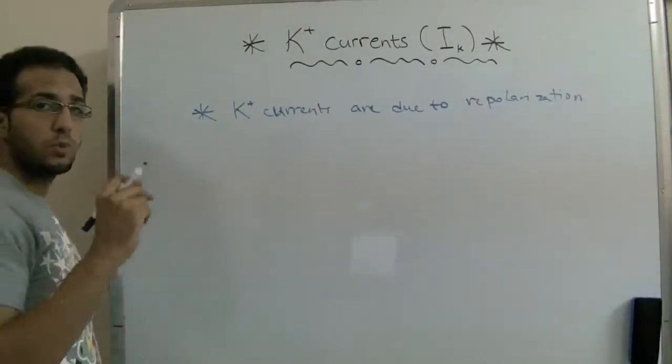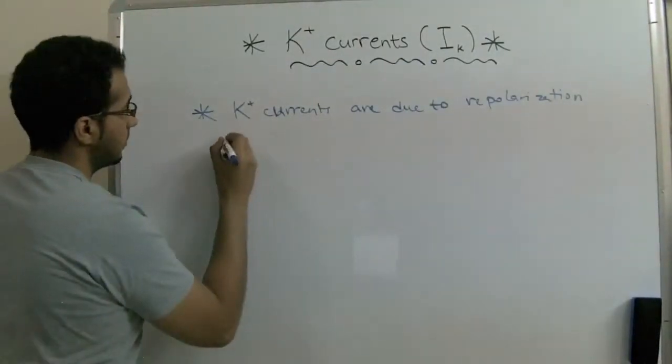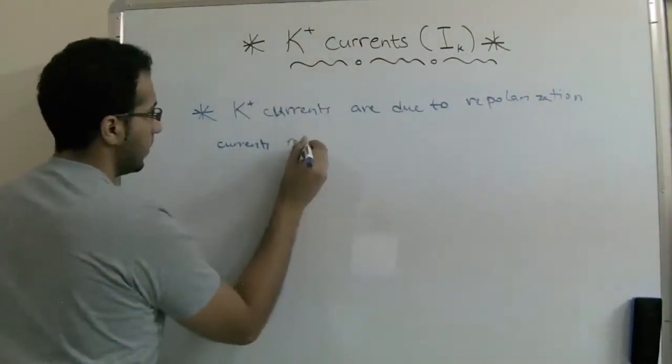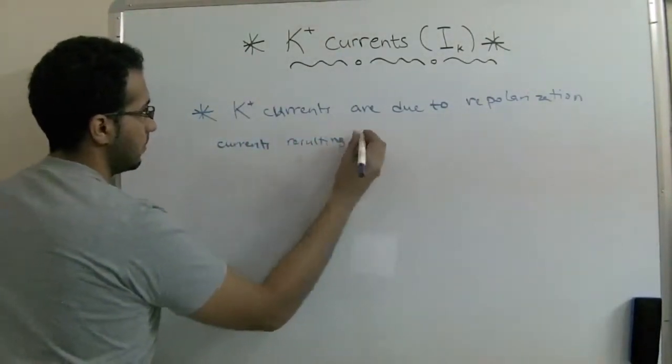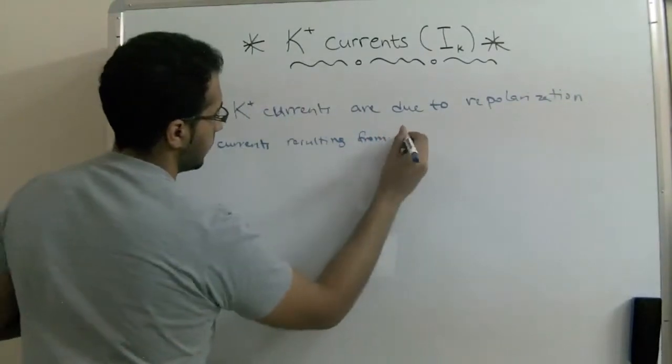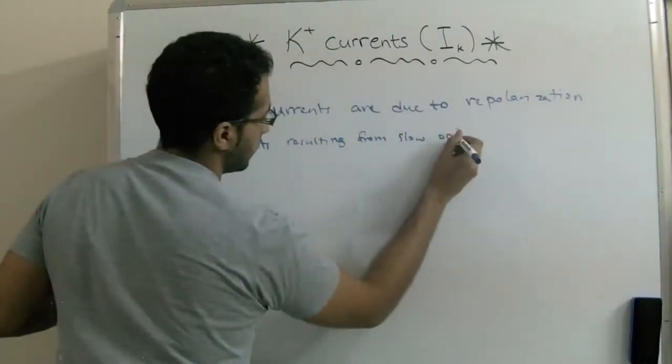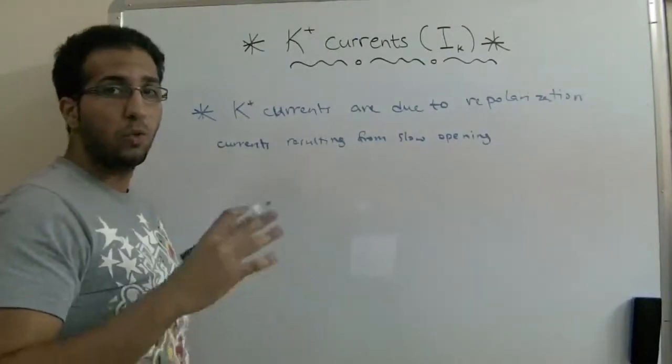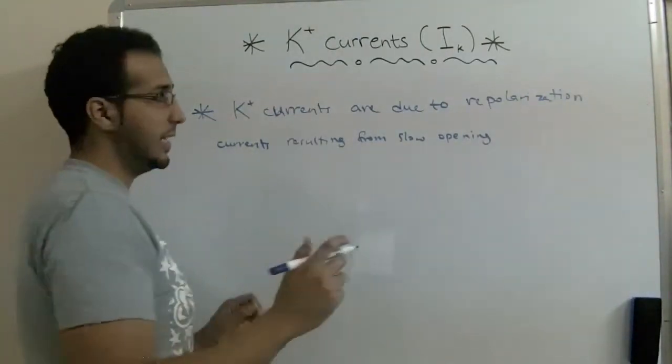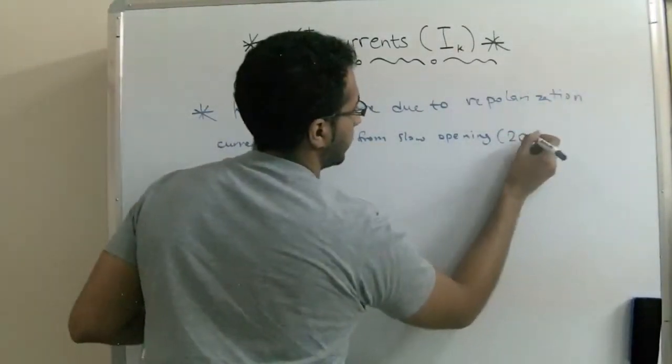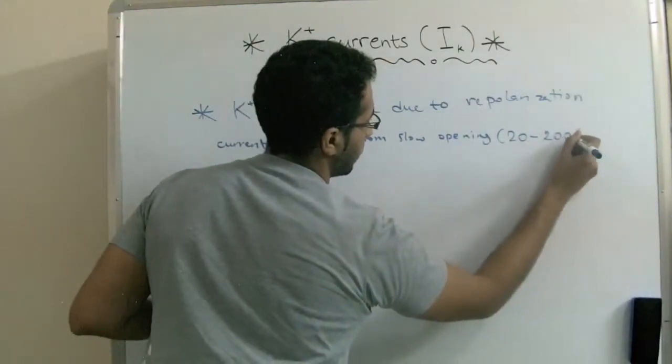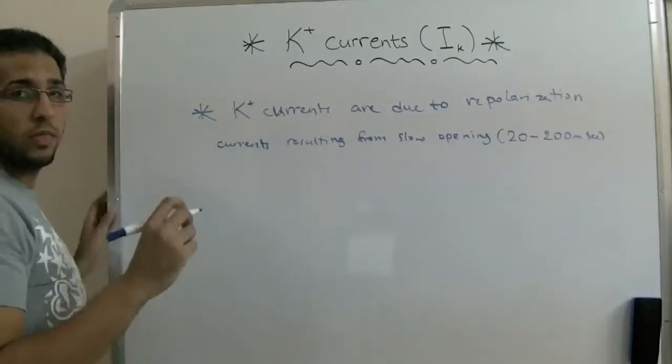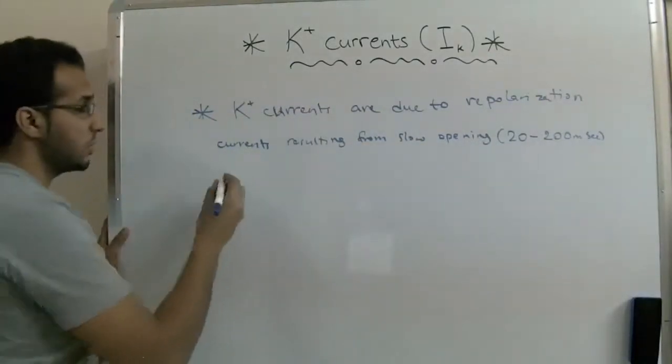These currents result from slow opening, and this flow is about 20 to 200 milliseconds with depolarization of potassium channels.